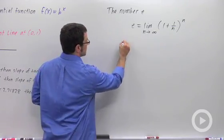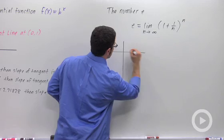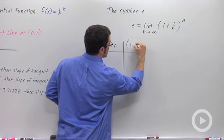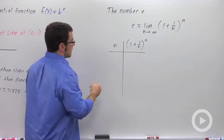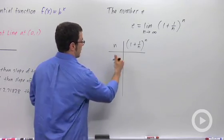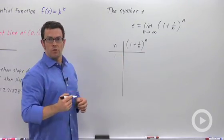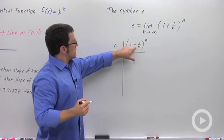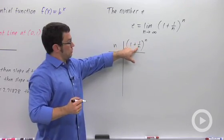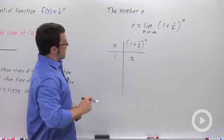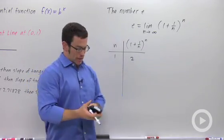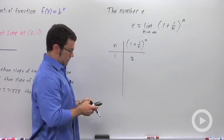So I'll make a little table. Let me start with the value 1. When n equals 1, I get (1 + 1/1), which is 2, to the 1. So I get 2. And anything past that, I'm going to need my calculator. So let me do this.